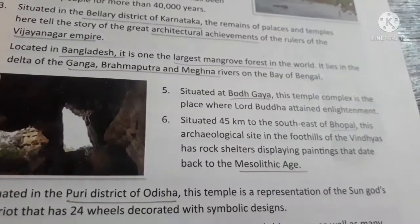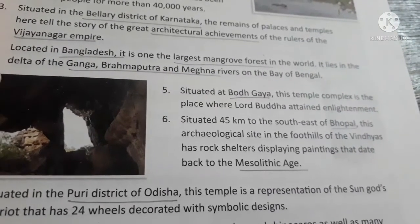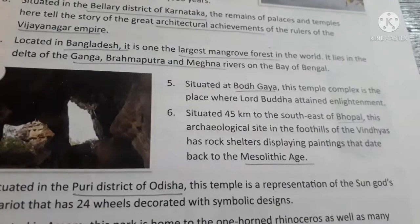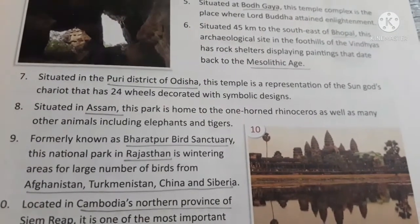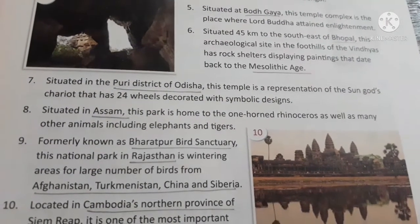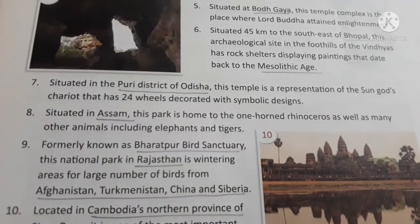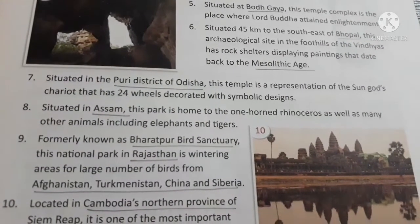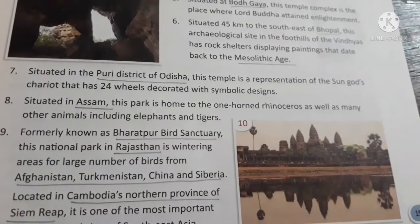Situated 45 kilometres to the south-east of Bhopal, this archaeological site is in the foothills of the Vindhyas — a historic center displaying paintings that date back to the Mesolithic Age. Situated in the Puri district of Odisha, this temple represents the Sun God's chariot and has 24 wheels decorated with symbolic designs. Situated in Assam, this park is home to the one-horned rhinoceros as well as elephants and tigers.